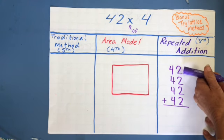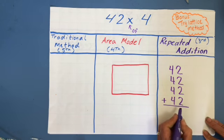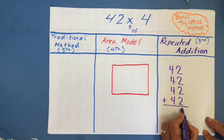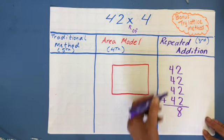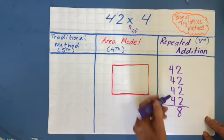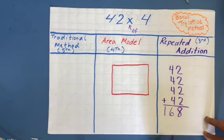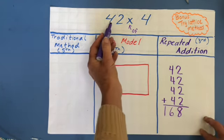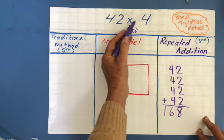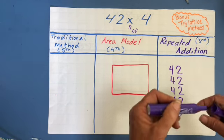I use my skip counting: 2, 4, 6, 8. That's 8 in the ones place. And I use my skip counting of 4s: 4, 8, 12, 16. And I've got my answer. I know 42 times 4 is equal to 168.